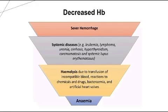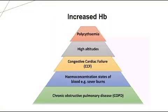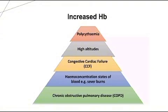Anemia is a decreased concentration of hemoglobin in blood. Causes of increased hemoglobin include: polycythemia (increased concentration of hemoglobin in blood); high altitude; congestive cardiac failure (CCF), in which the heart fails to pump blood; hemoconcentration states such as severe burns; and chronic obstructive pulmonary disease (COPD), which is failure of the lungs causing breathing problems.